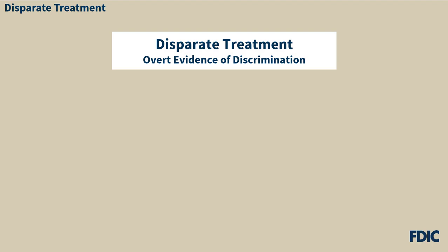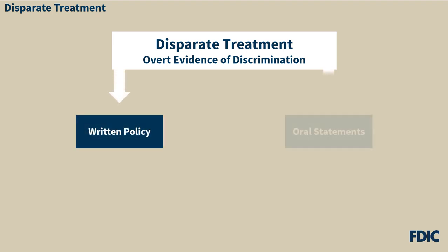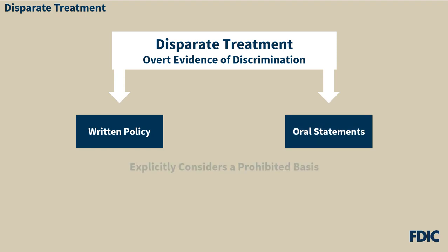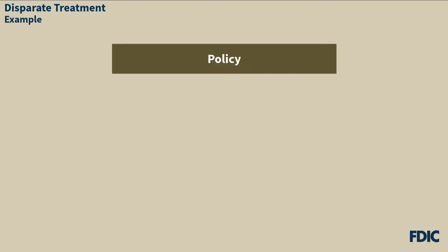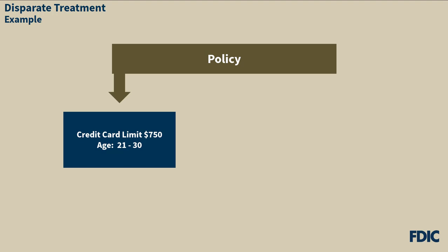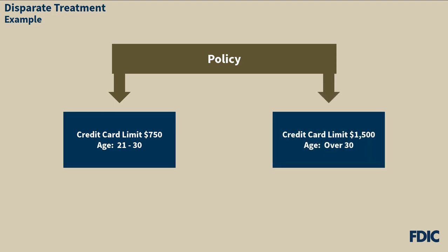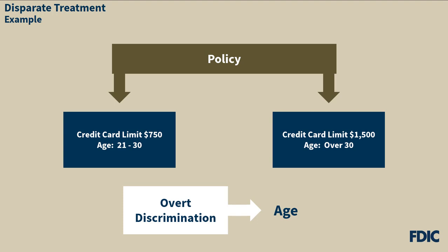Overt evidence of discrimination is where a lender expressly discriminates on a prohibited basis. It can be established by a written policy or an oral statement revealing that a lender explicitly considered a prohibited basis. Overt evidence of discrimination can also exist when a lender expresses a discriminatory preference, regardless of whether the lender acts upon it. For example, a lender has a policy of offering a credit card with a limit of up to $750 for applicants aged 21 through 30 and $1,500 for applicants over age 30. This policy would result in overt discrimination based on age because applicants 21 to 30 years old are not eligible for higher credit limits because of their age.